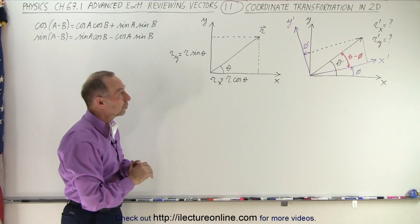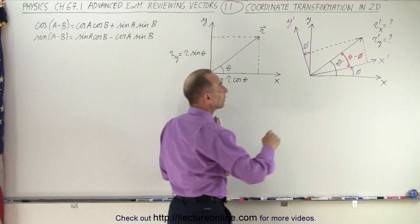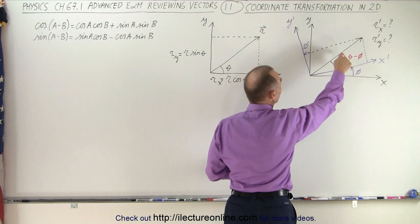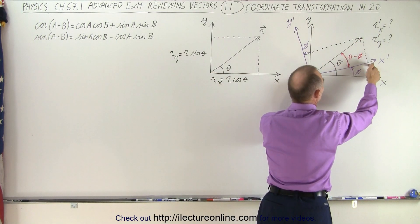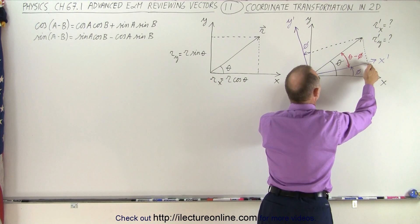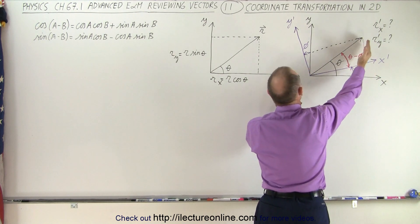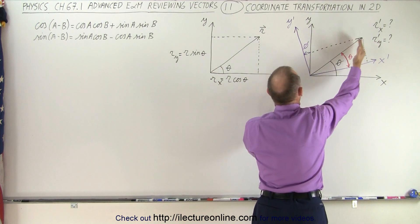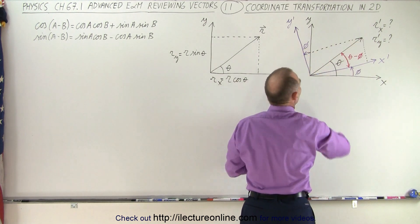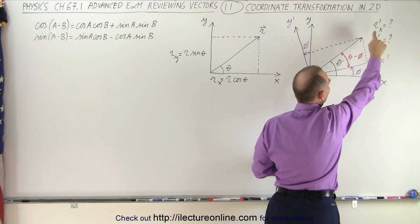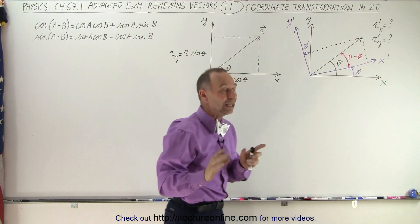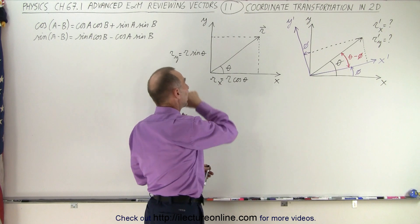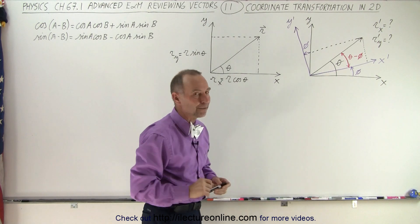So what we're going to need to do now is find a new expression where we have the R vector projected on the X' axis, and we have to project the R vector onto the Y' axis. So we're going to find R sub X' and R sub Y' in terms of R sub X and R sub Y.